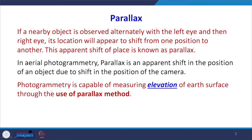If a nearby object is observed alternately with our left eye and then with our right eye, its location will appear to shift in position. This happens when I close one eye and see the object in front of me, then close the second eye and see the object — I find a change in location, and this apparent shift is known as parallax. In aerial photography, what is changing is the position of the camera, and because photographs have been taken from different exposure stations up in space, parallax is introduced in the photographs.